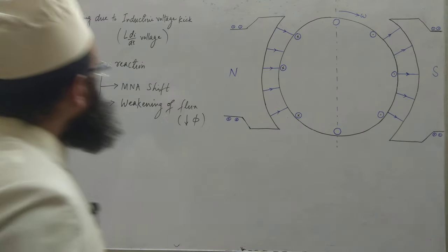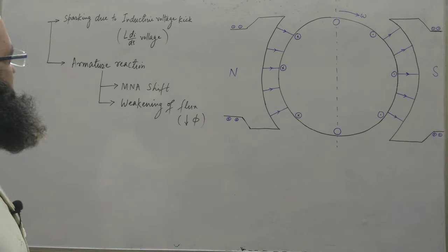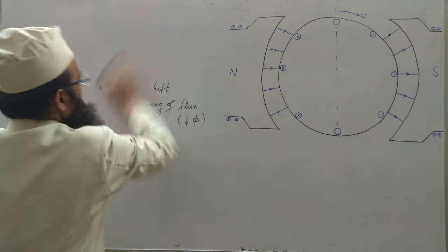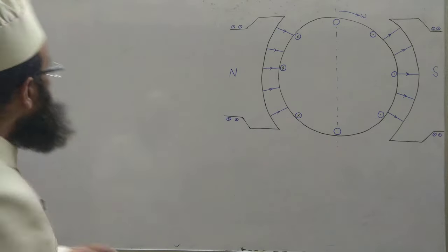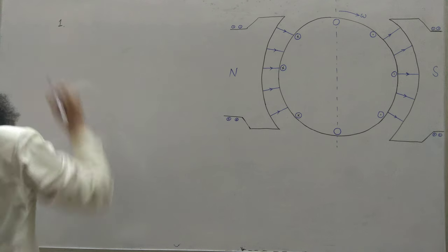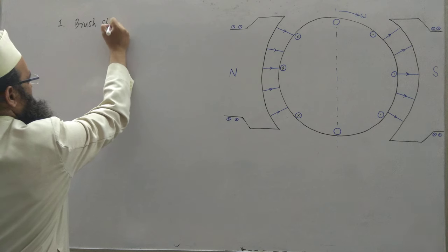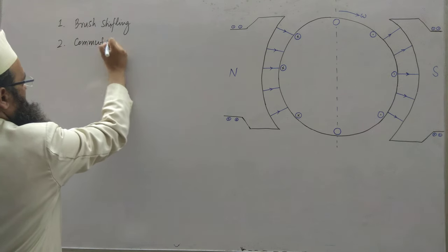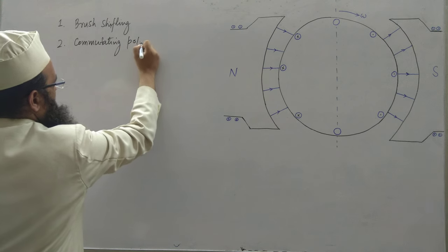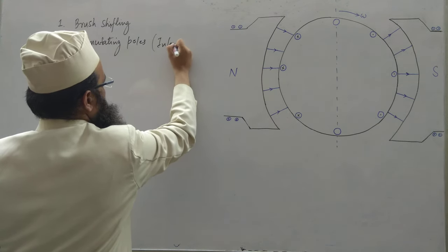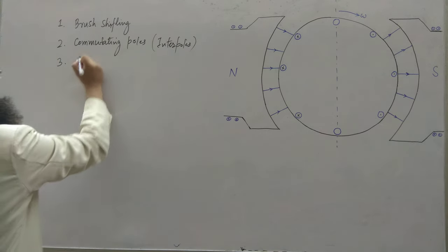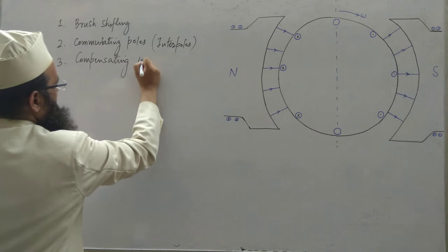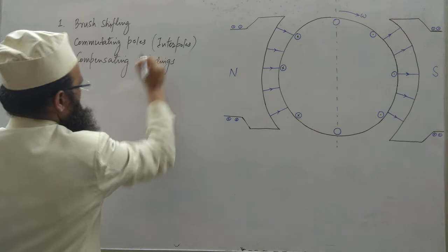Today we will discuss solutions to these problems. In order to solve these problems partially or completely, the following three approaches have been developed: first, brush shifting; second, commutating poles, also known as interpoles; and third, compensating windings. We will discuss each one by one.